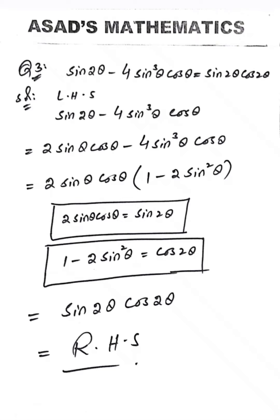The third and last question is: sin 2θ minus 4 sin³ θ into cos θ equals sin 2θ into cos 2θ. Taking the left hand side, apply the formula sin 2θ = 2 sin θ into cos θ. We have two terms, and we take 2 sin θ cos θ common from both terms. The first term leaves only 1, and the second term leaves 2 sin² θ remaining.